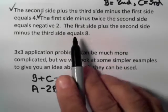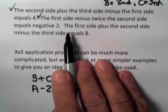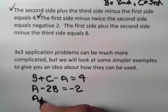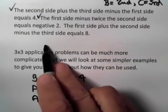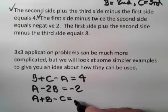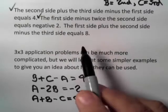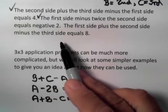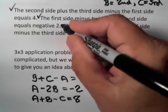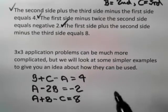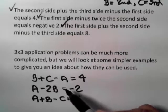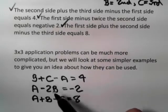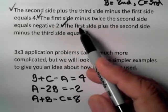The last sentence gives us our third equation: the first side A plus the second side B, minus the third side C, equals eight. Double-checking: A plus B minus C equals eight. Now, of course, we'd solve this 3x3 system using any of the techniques previously learned, and the values A, B, and C would be the three sides of the triangle.